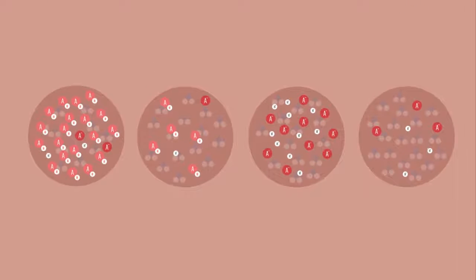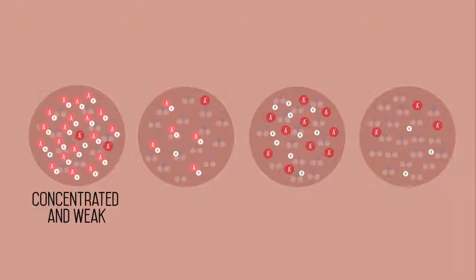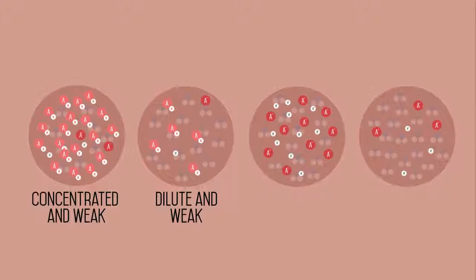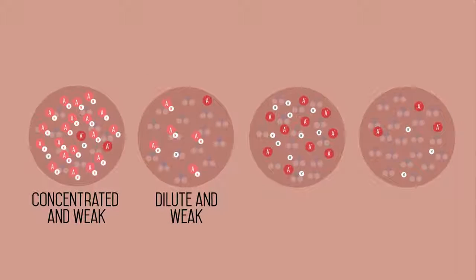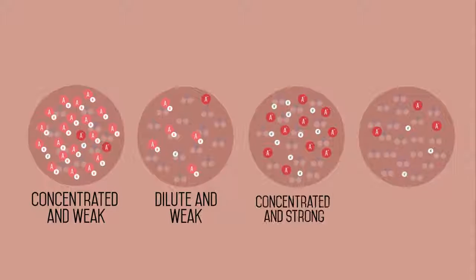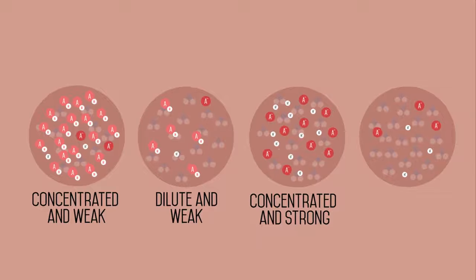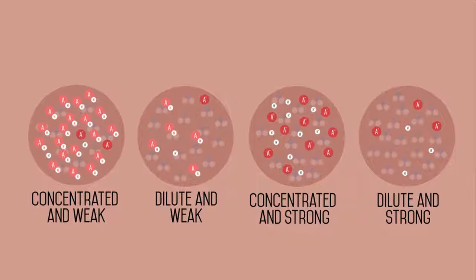Well here is the answer. A is both concentrated and fully dissociated so strong. B is also concentrated but not fully dissociated so weak. C is dilute but strong because it is fully dissociated. And D is dilute and weak.